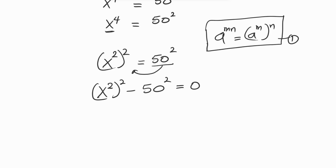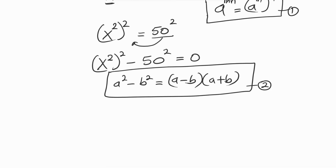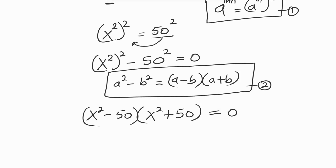This is looking like the difference of two squares, where we have that a squared minus b squared equals a minus b, times a plus b. That is our formula. Now let's expand x squared raised to power 2 minus 50 squared into that form. So what we have is x squared minus 50, times x squared plus 50, equals 0.